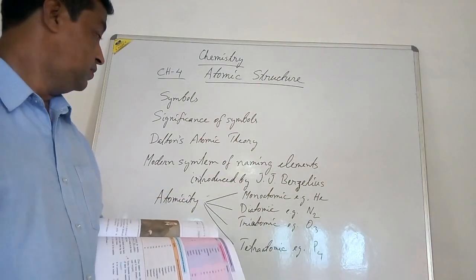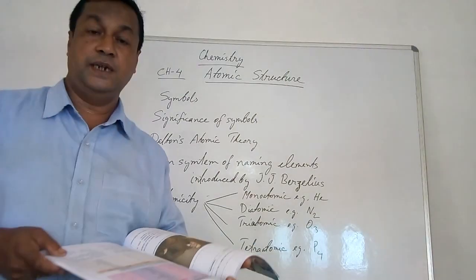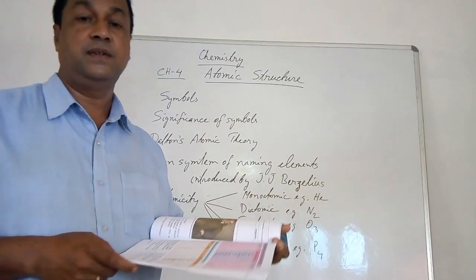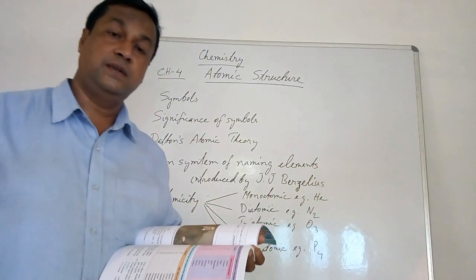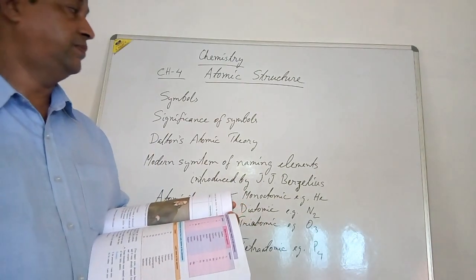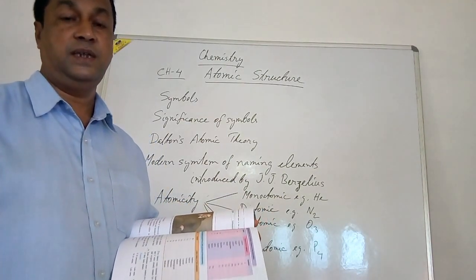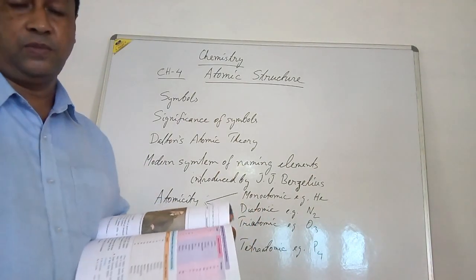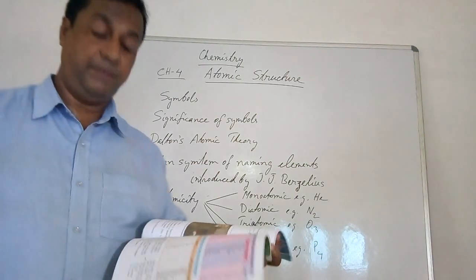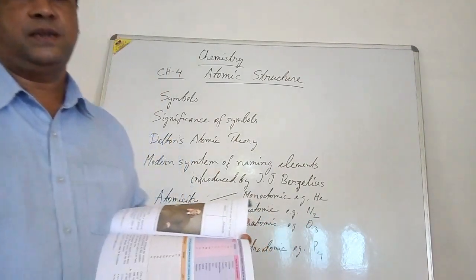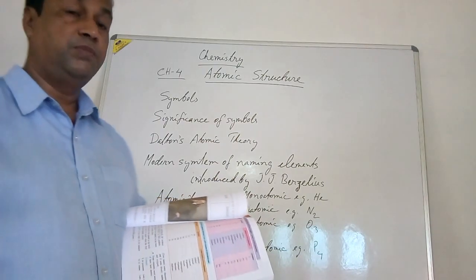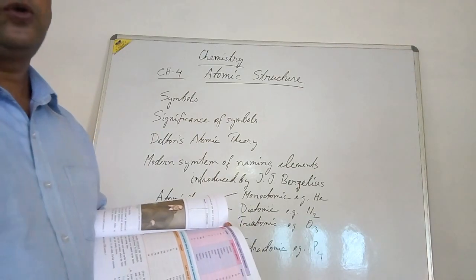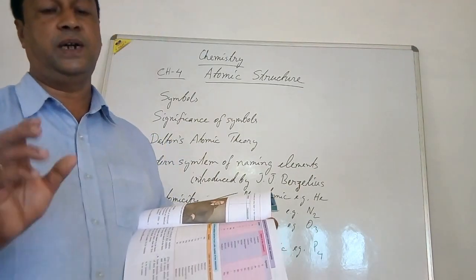The first method is that some elements are given a symbol using the first letter of their name. For example, hydrogen has the symbol H, which is the first letter of hydrogen. Another method is to use the first two letters of the name — for example, cobalt has the symbol Co, taking the first two letters.